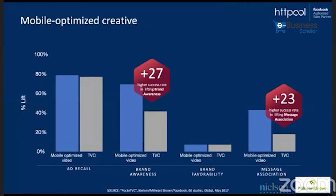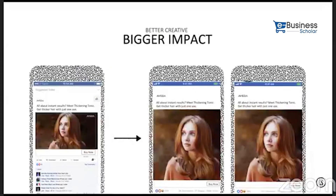Another Nielsen survey compared horizontal TVC versus mobile-optimized creative. You can see the difference in brand awareness and message association. If we run a traditional horizontal TVC versus a mobile-optimized TVC, the brand can add 27 additional points in brand awareness lift and an additional 23 points in message association. Better creative leads to bigger sales.